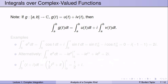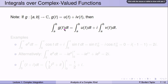We haven't yet defined how to integrate a complex-valued function, so let's look at some examples. Suppose g is a function from [a, b] into ℂ, written g(t) = u(t) + i·v(t). Then the integral from a to b of g(t) dt means the integral of u plus i times the integral of v — we integrate the real part and the imaginary part separately, then put them back together.